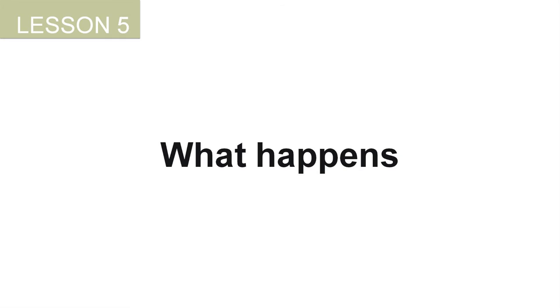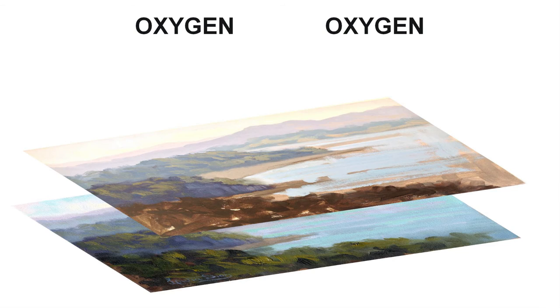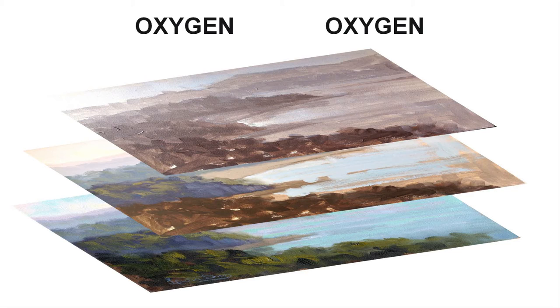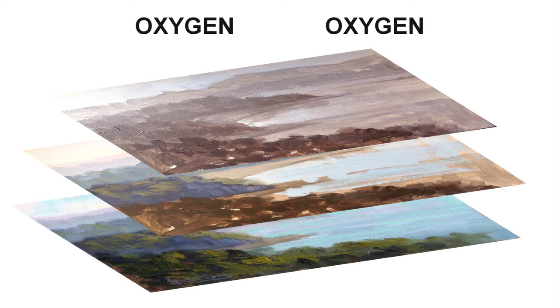But what happens if you paint lean over fat? Oil paint is a living medium — it can take months or years to dry thoroughly. If you put a fat or more oily layer down first, it will take much longer to dry as air can't get in as easily. The top lean layer, drying faster, won't have enough moisture and flexibility to follow the expanding and contracting movement of the under layer. As a result, the paint film might crack in the early years of your painting, compromising the longevity of your artwork.